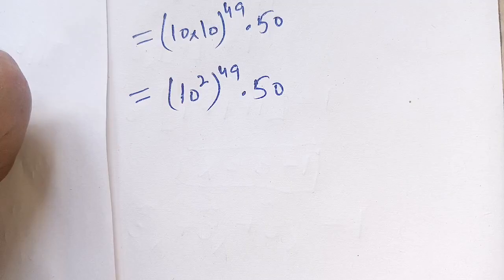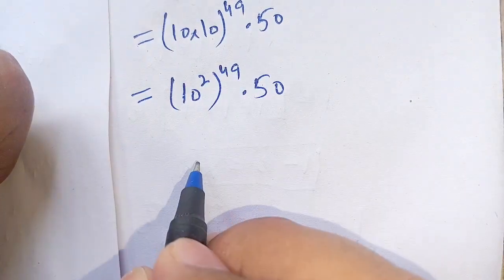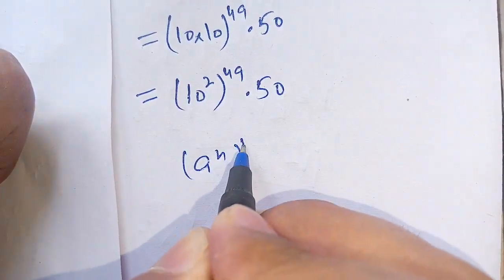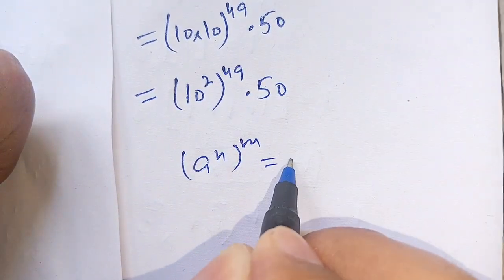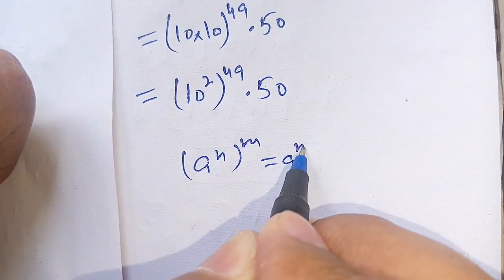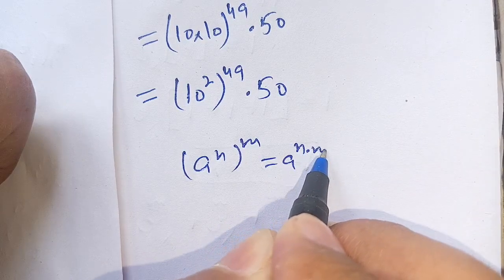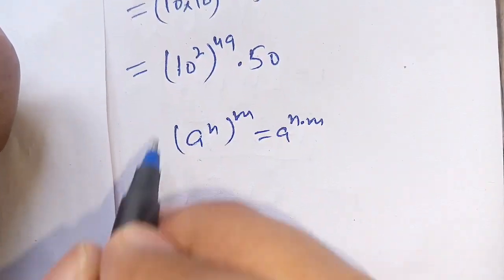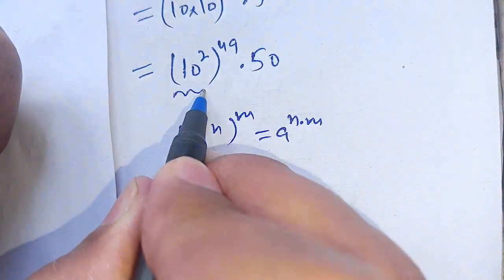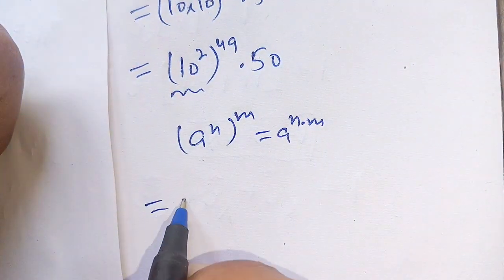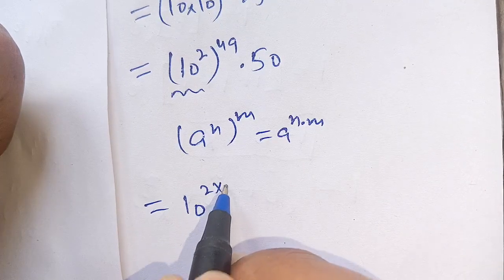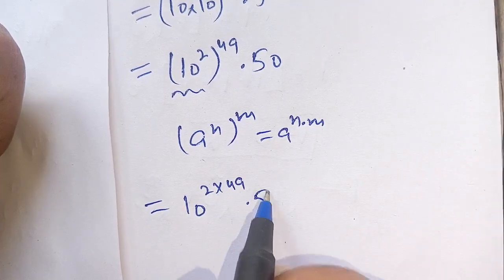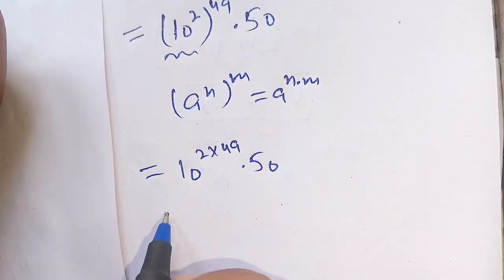We know that a raise to power n, bracket power m, is equal to a raise to power n times m. Using this identity, we get 10 raise to power 2 times 49 times 50.